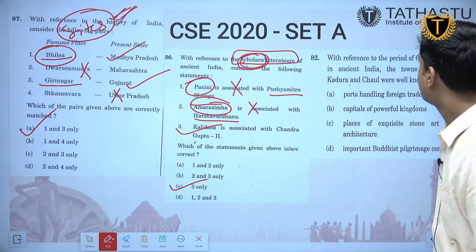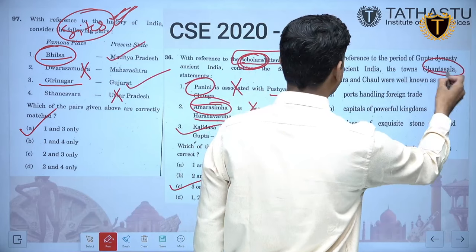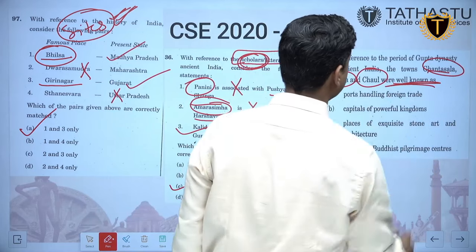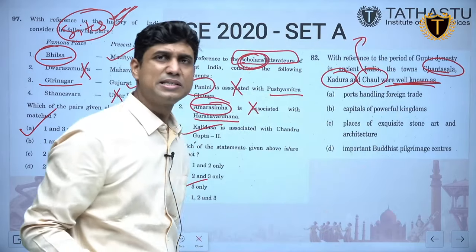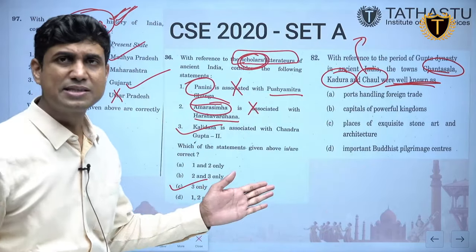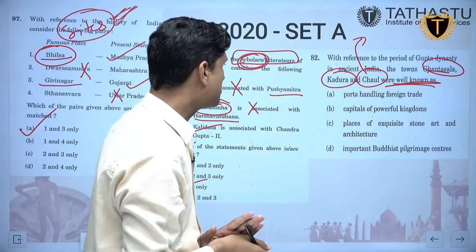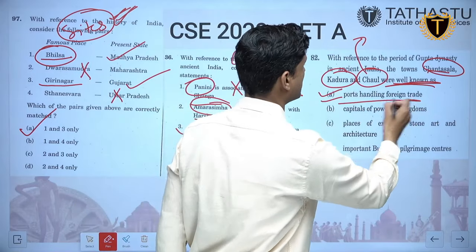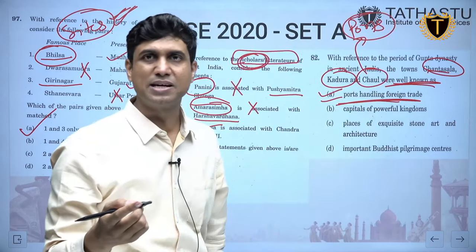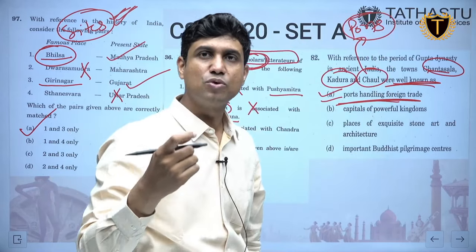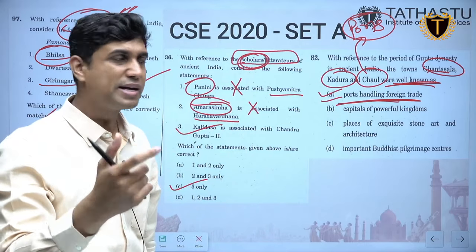With reference to the Gupta dynasty, the towns Ghantasala, Kadura and Chaul were well-known as ports handling foreign trade. Chaul is mentioned in standard textbooks including Tamil Nadu books and NCERTs. Port is another area UPSC asks — in 2023 also ports were asked. So pick themes from PYQs that are repeated so you can score high marks.